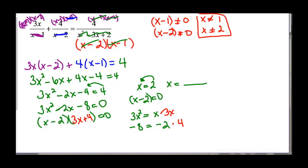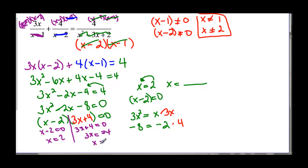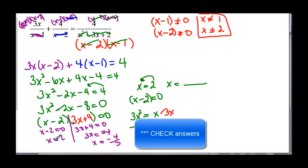You can use the quadratic formula to help you factor. Setting each factor equal to zero: if x minus two equals zero, x equals two. If three x plus four equals zero, then three x equals negative four, so x equals negative four-thirds. Now I check: x cannot equal two, so I cannot use x equals two as an answer. Negative four-thirds is not one of my restrictions, so the only answer is negative four-thirds.